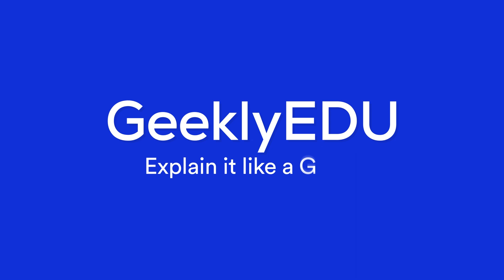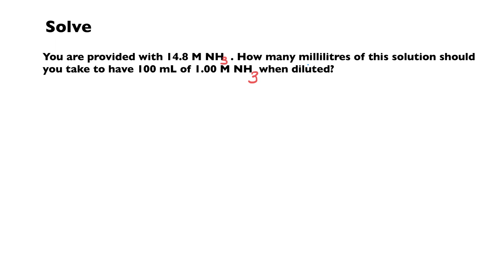So what was the problem? We are provided with a solution of 14.8 molar NH3, and we were asked how many milliliters of the solution should you take to have 100 ml of 1 molar NH3 when diluted.